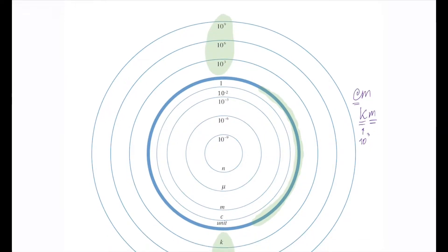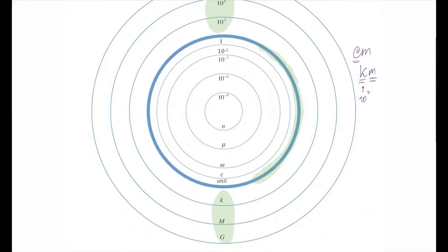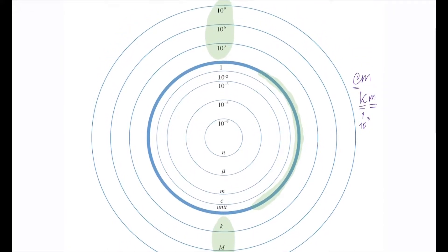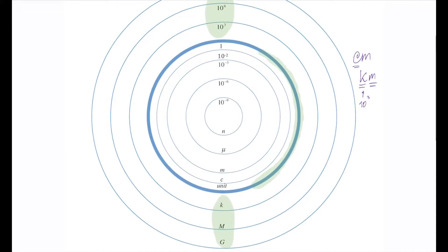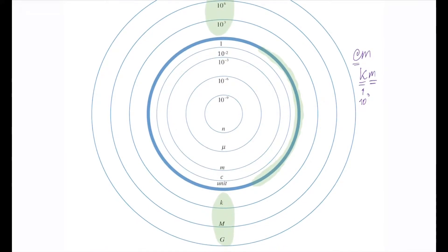Giga is 10 to the ninth, although in computers it's different. Mega is 10 to the sixth. And kilo, as I said, is a thousand. Anything inside the circle will be smaller. So if you look at centi, milli, micro, and nano — those are tiny. They're smaller; they're within the unit.